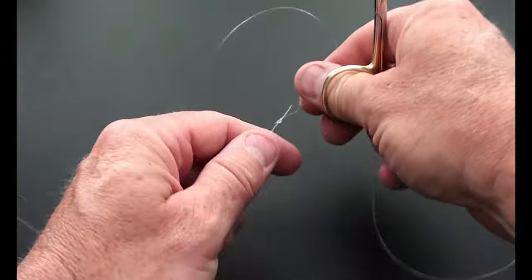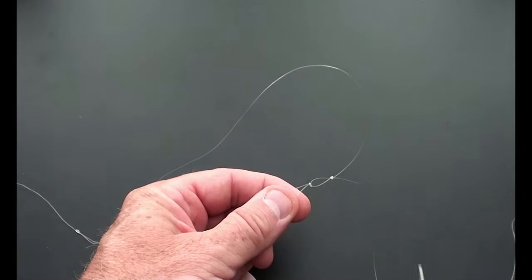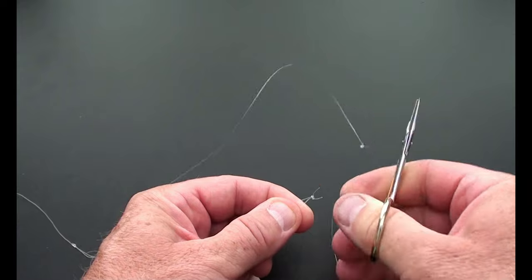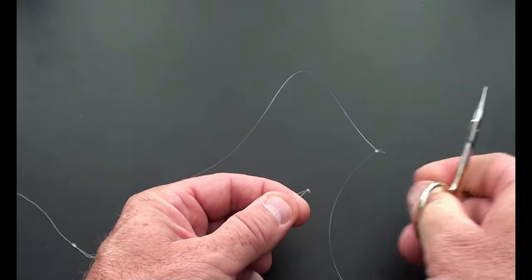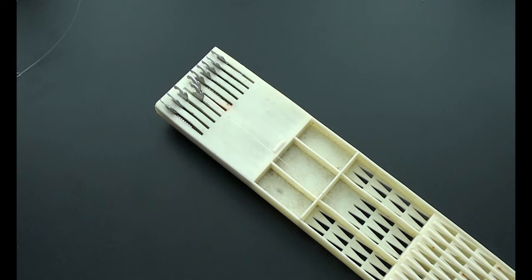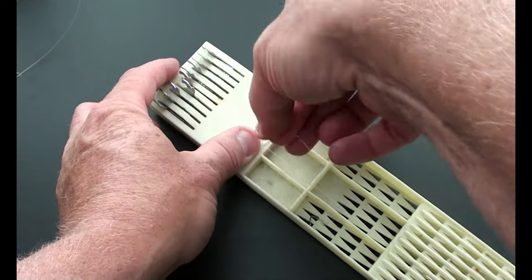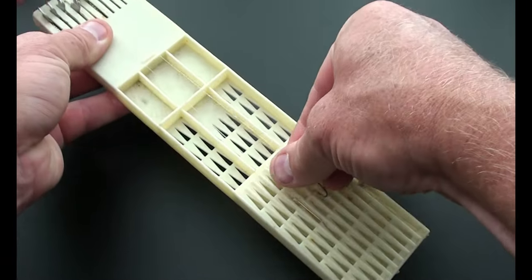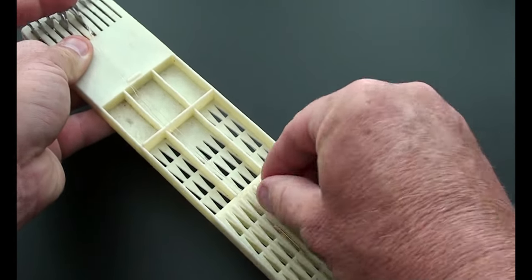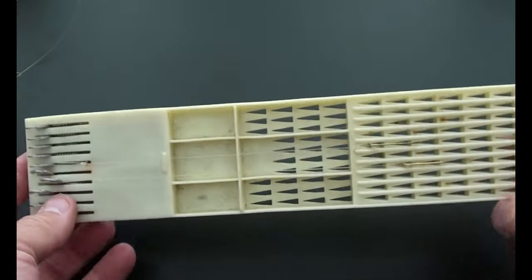To remove these, just simply cut the loop that you made in the main line. Just be careful not to cut the snell loop because you'll ruin the snell rig. I just store these on one of these snell hook holders. You can pick them up for just a few bucks on Amazon or Bass Pro Shops. I'll drop a link in the description so you can purchase one if you haven't got one already. But that's all there is to it.